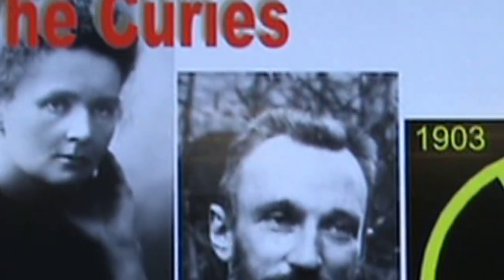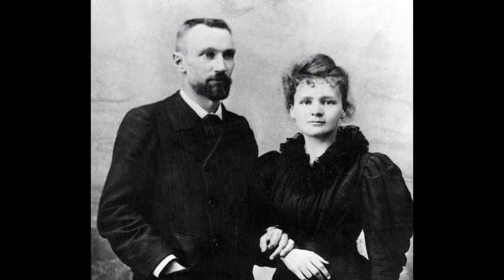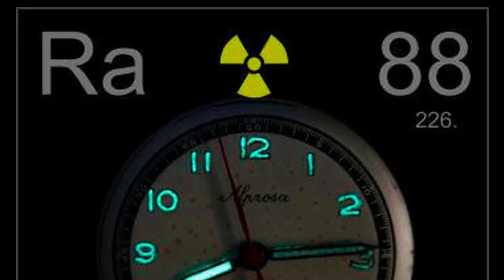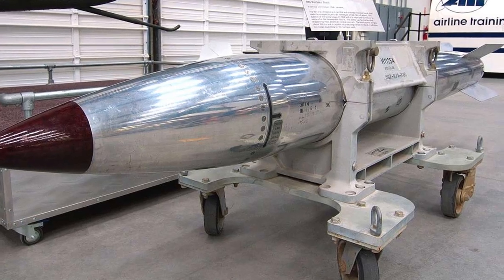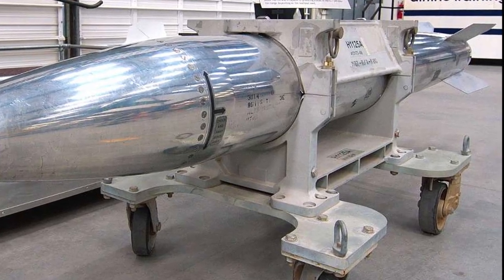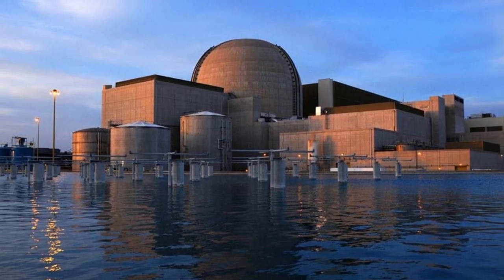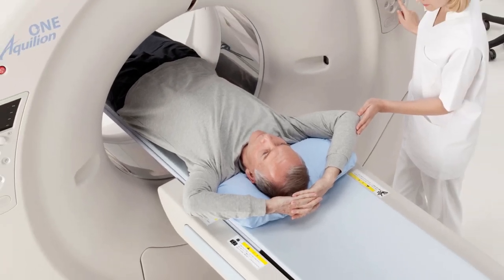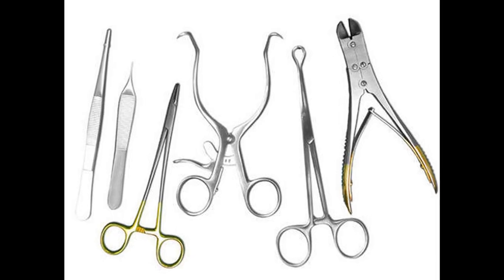The Curies — Marie and Pierre — worked with radioactivity. Marie Curie was the first woman to be awarded a Nobel Prize. They were able to isolate the radioactive element radium from a mineral called pitchblende, and that discovery had huge consequences later on: things like nuclear weapons, the atomic bomb, and nuclear energy. But radioactivity also has a lot of really good uses — it's used in medicine and to sterilize surgical instruments.